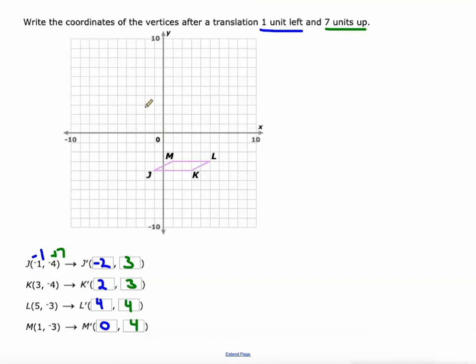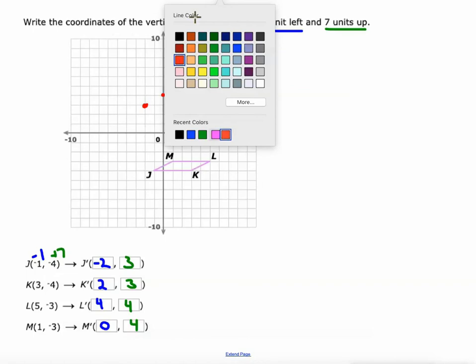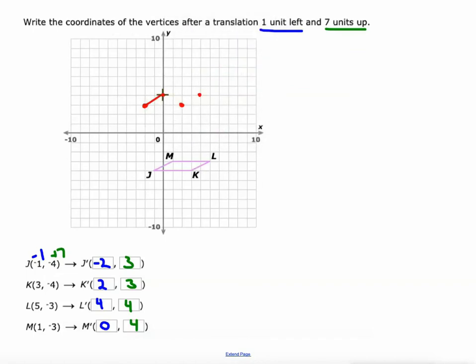Negative two positive three. Positive two positive three. Four, four. And zero, four. Connect our vertices and we should have the same exact figure just slid up into the left a little bit.